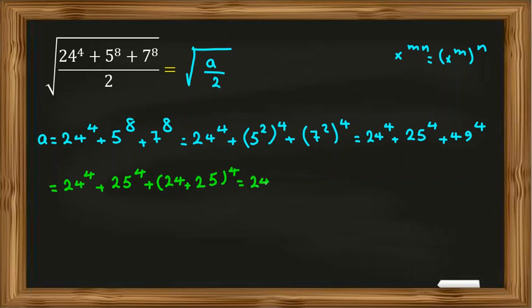So this part will be 24 to the 4 plus 25 to the 4 plus 24 plus 25 to the 4. This is a formula: